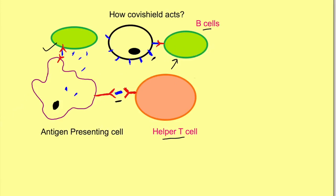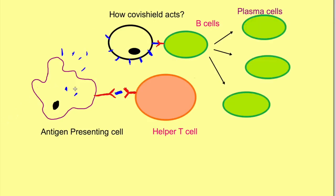These B cells now start maturing and proliferating, causing the formation of plasma cells which ultimately secrete antibodies against these spike proteins. So this is one mechanism: the vaccine, by delivering the spike protein through adenovirus, causes the activation of B cells and the release of antibodies from them.